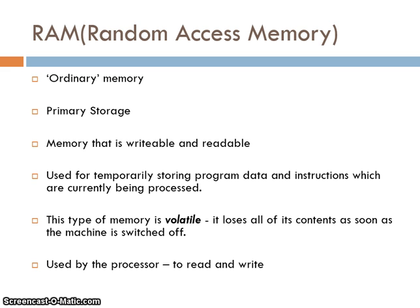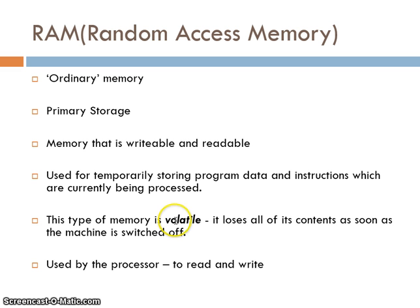RAM is your ordinary memory — your RAM sticks — and can be upgraded inside your computer. You typically have two to four gigabytes, or you may have eight gigabytes of RAM. RAM loses all of its data when the power is switched off; this is known as volatile. RAM is known as primary storage — it stores the data and instructions in use, but once the power is turned off everything is cleared. Unless you saved something, it's lost. It is used for temporarily storing program data and instructions, and the processor uses it to read and write.